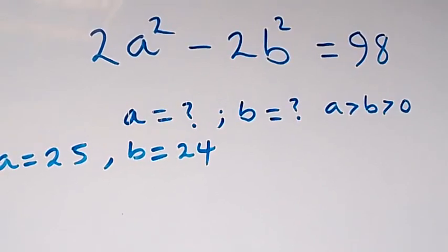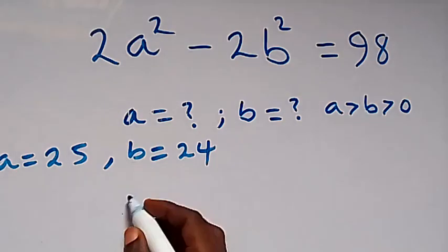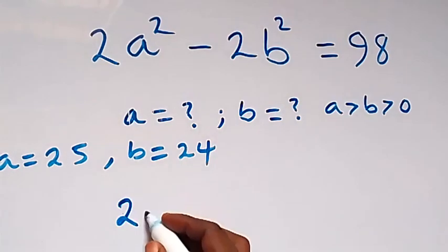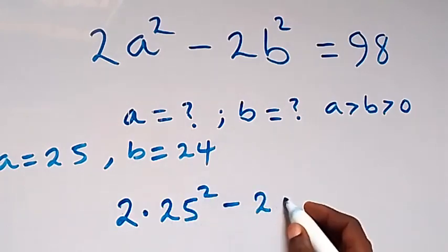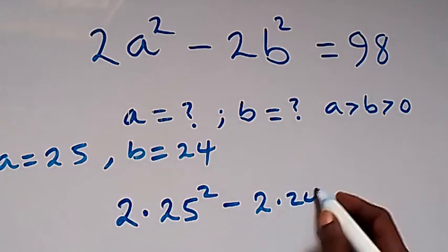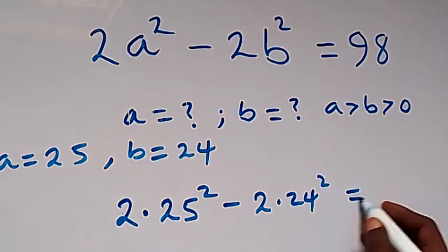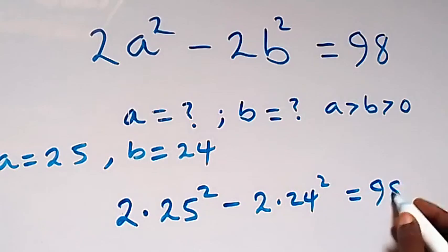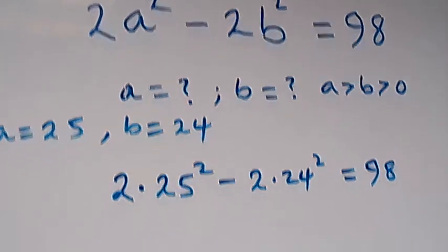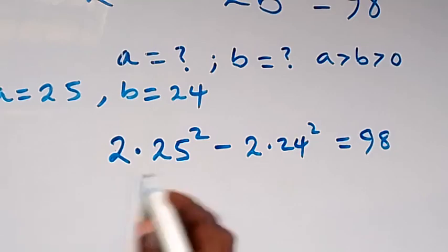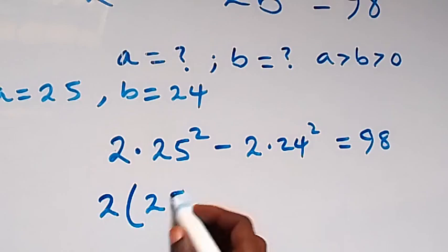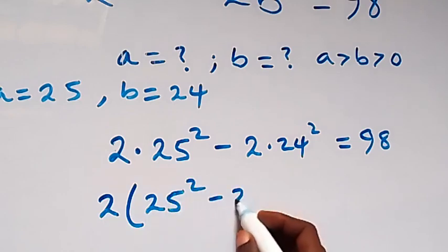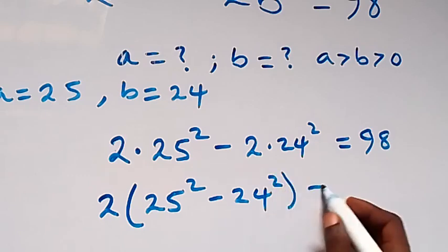We have 2 times 25 squared minus 2 times 24 squared equals to 98. Then here 2 is common here, we factor it out, then we have 25 squared minus 24 squared left, then it goes to 98 from here.